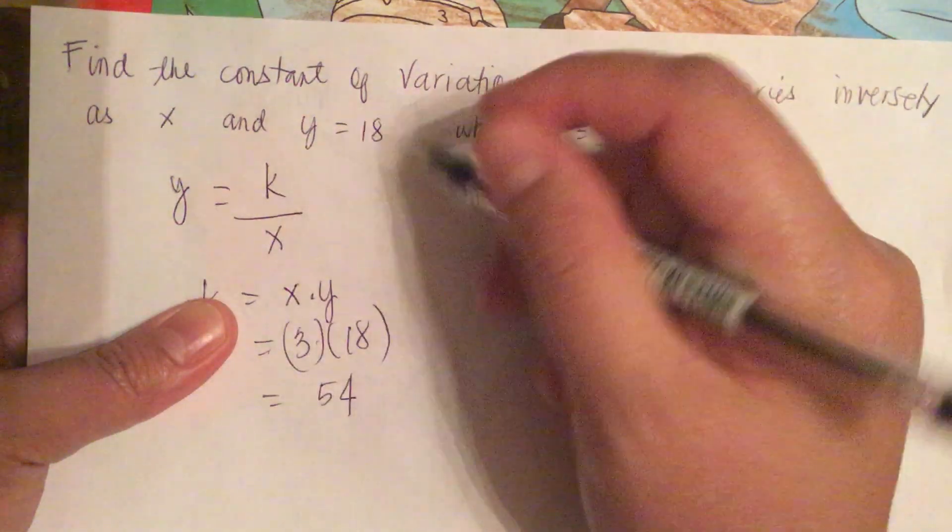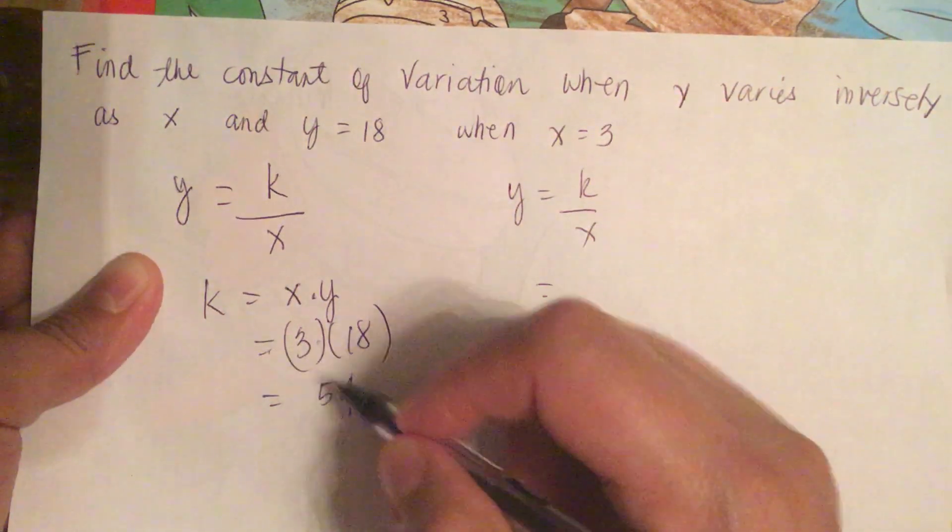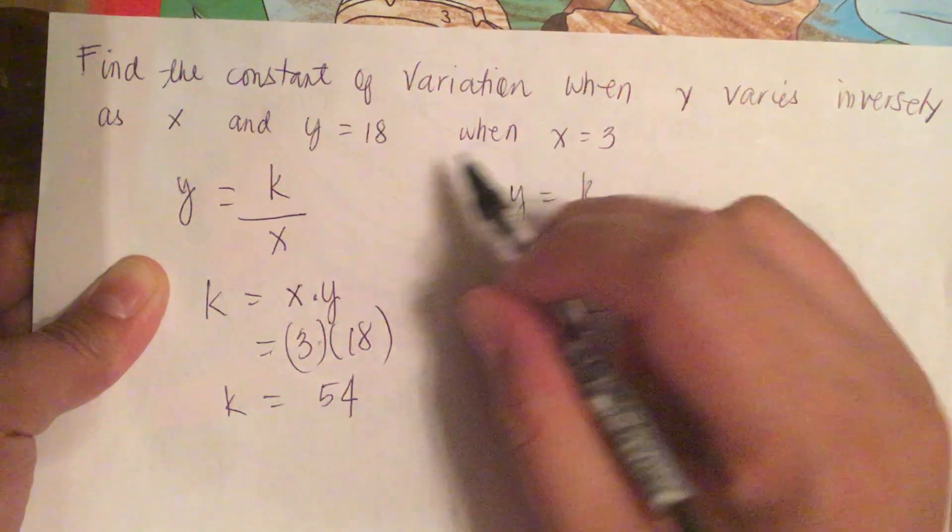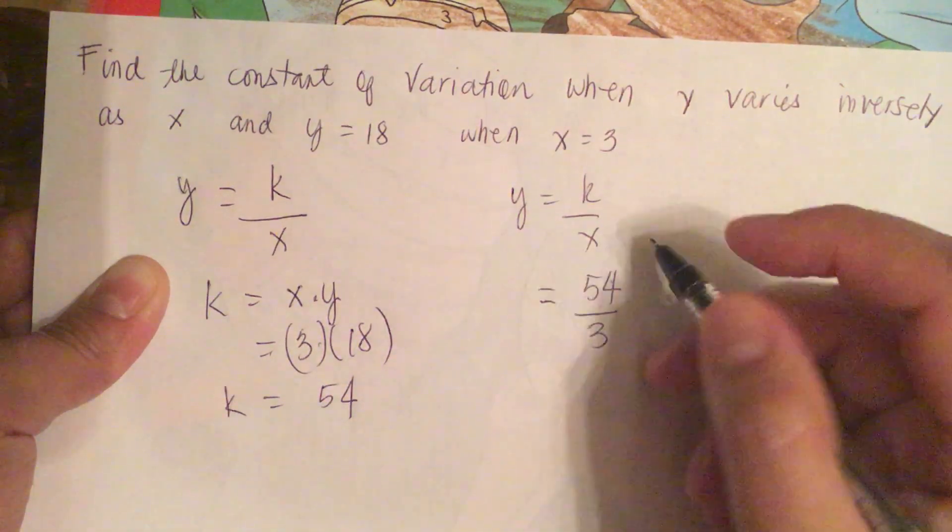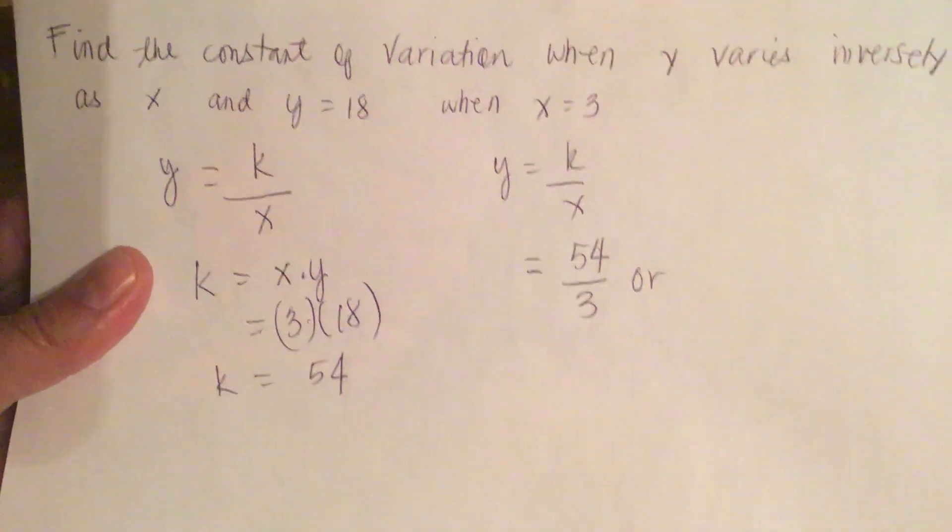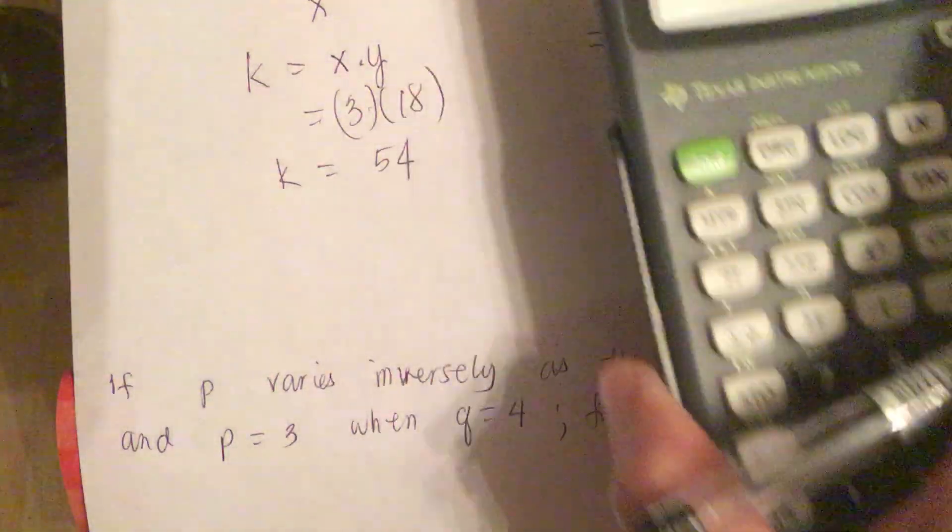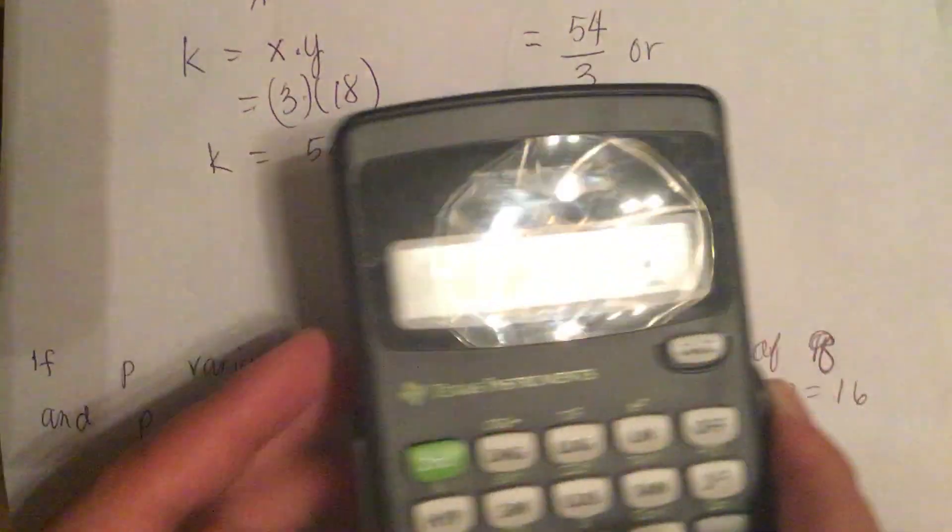So we have y is equal to k over x. So k is equal to 54 and x is equal to 3. So 54 over 3. So 54 divided by 3 is equal to 18.